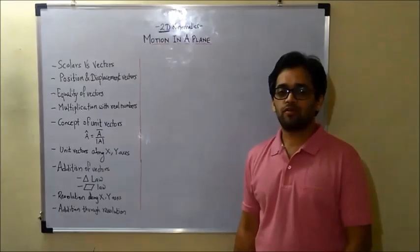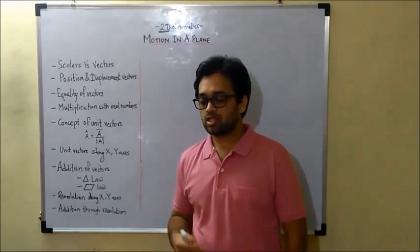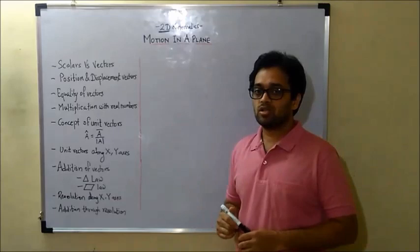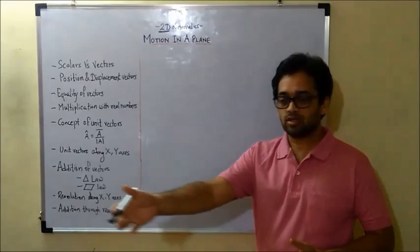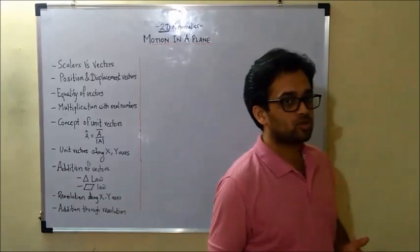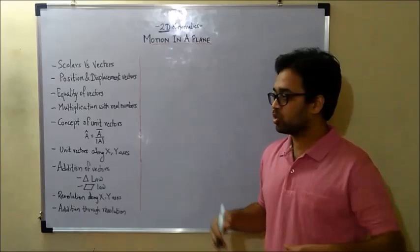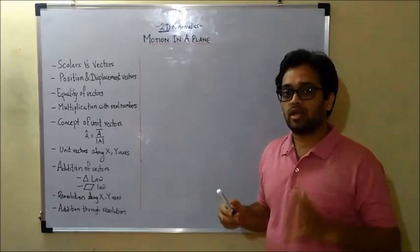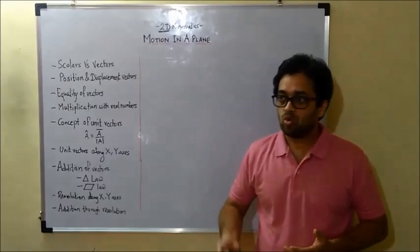Hello everyone. Today we will be starting with the second chapter, which is two-dimensional kinematics. Two-dimensional motion — let me give you some examples. If I just move around in this room, I am moving in two dimensions because I am moving in X and I am moving in Y. The sides or corners of this room form your XY coordinate system. I don't move up and down, so the Z direction is not involved. This is two-dimensional motion.